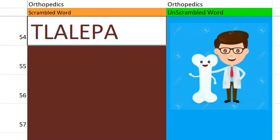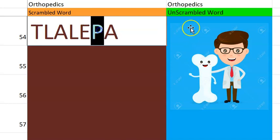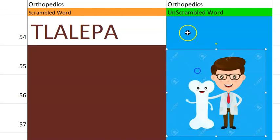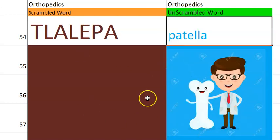Now let's go to the 54th one. Starting letter P — it's the name of a bone in your knee joint, a sesamoid bone. Patella.